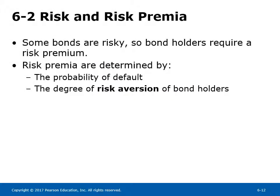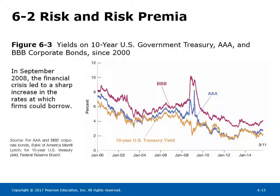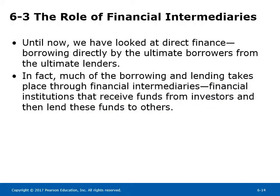Section 6-2: Risk and Risk Premia. Some bonds are risky, so bondholders require a risk premium. Risk premia are determined by the probability of default and the degree of risk aversion of bondholders. Figure 6-3 shows yields on 10-year US government treasury, AAA, and BBB corporate bonds since 2000. It illustrates the impact of risk premia on the interest rates at which different organizations could borrow. In September 2008, the financial crisis led to a sharp increase in the rates at which firms could borrow.